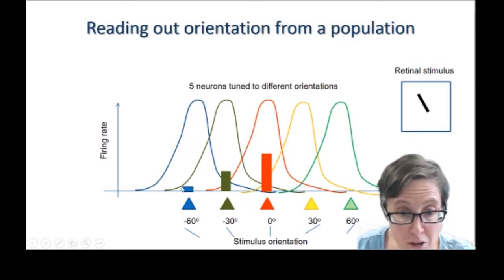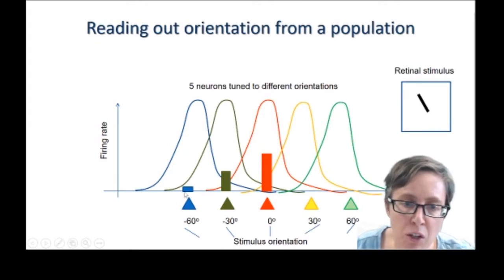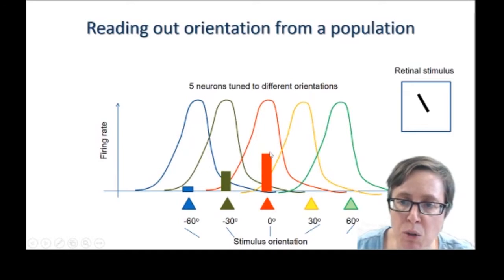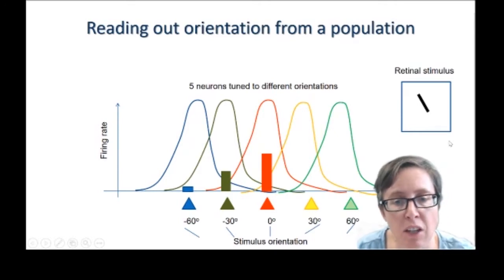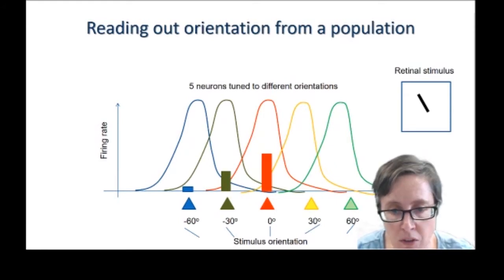So if you're the brain and you see a pattern like this, with the blue neuron responding very little, the green a bit more and the red quite a lot, then you can deduce that the retinal stimulus must be minus 15 degrees. And there isn't that ambiguity. The population has enabled you to read out the orientation in a way that a single neuron just couldn't on its own.